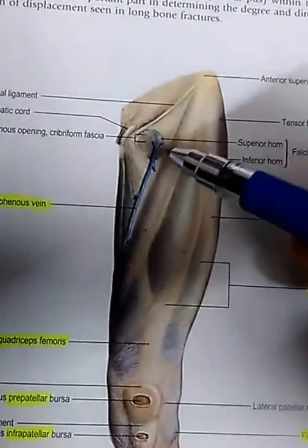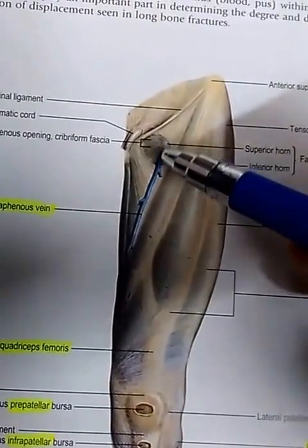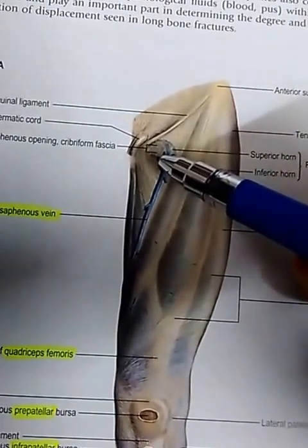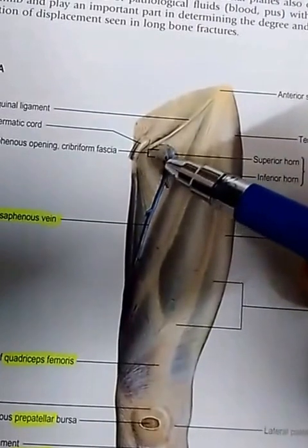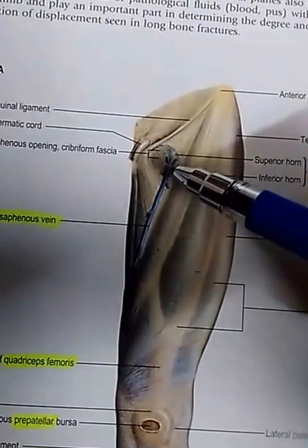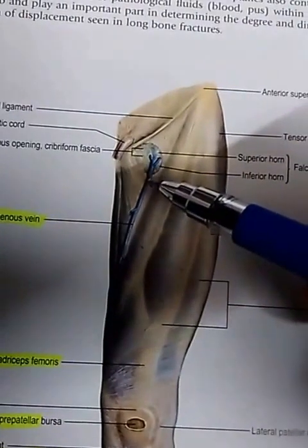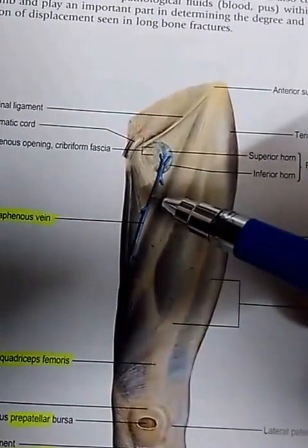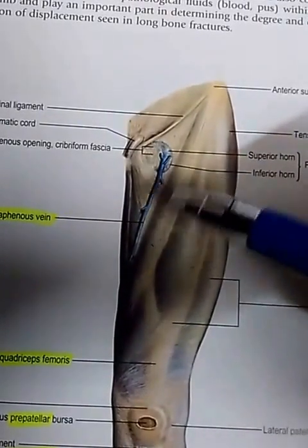Just below the inguinal ligament there is the saphenous opening. This is not a true opening — it is basically covered with a cribriform fascia. Here you can see the long saphenous vein passing through this region.